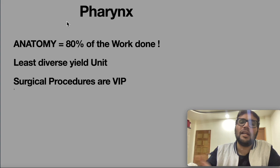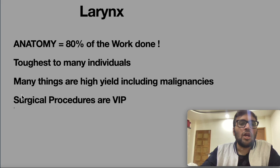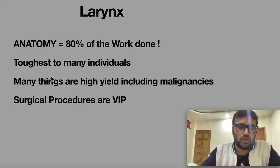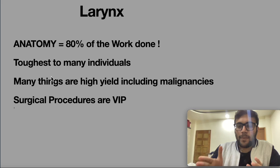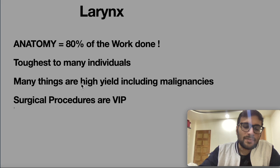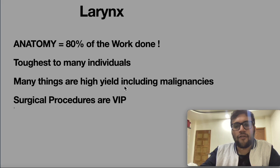For larynx: anatomy is again the main role, and this is the toughest unit for many individuals. The vocal cord anatomy and related concepts cause confusion for most students. You need to give it dedicated time — compared to pharynx, it will take 2–3 extra days. Don't think you'll skip laryngeal carcinoma — no, if you skip it now, there's no 'I'll study it in final year.' Everything in larynx is important. Surgical procedures like tracheostomy are also important and must be remembered.